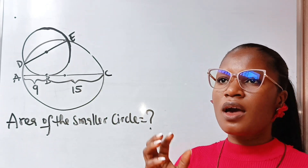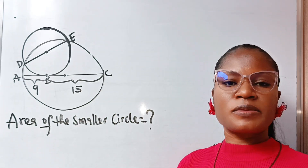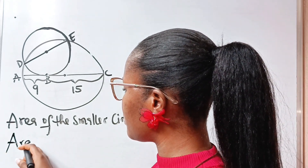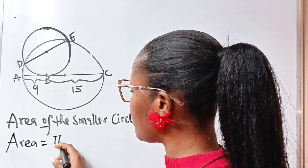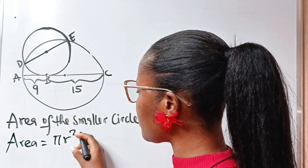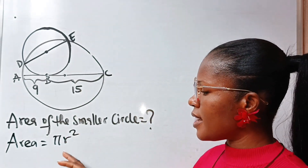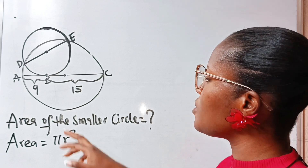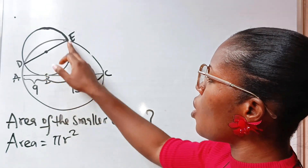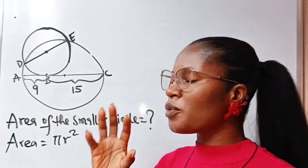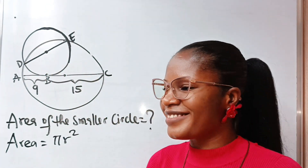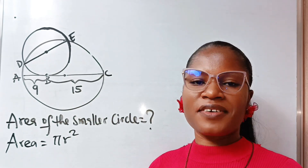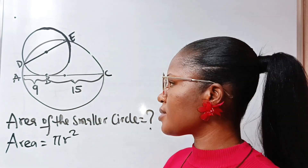First, the area of a circle is π r squared. Notice that π is constant. Therefore, if we are able to find the radius of this smaller circle, then we'll be able to find the area. So everything we are doing now is focused on finding the radius of the smaller circle.